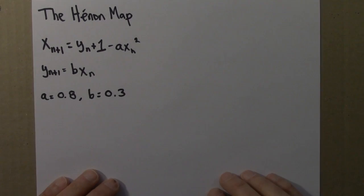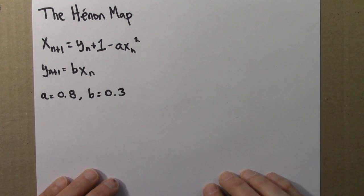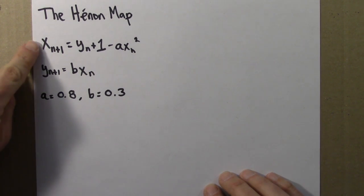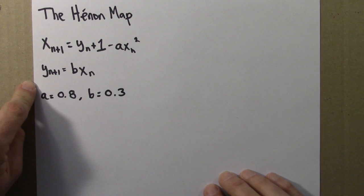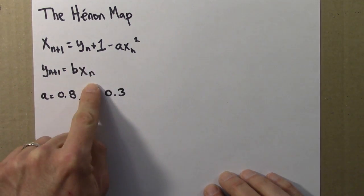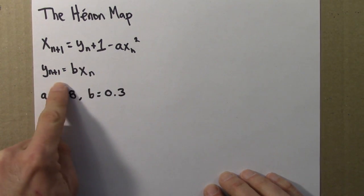So let's get started by looking again at the Henon map. Here's the Henon map. It's an iterated function, a two-dimensional iterated function. There are two variables, x and y, and the next x and y value is just a function of the previous x and y values, and this tells you what the function is.